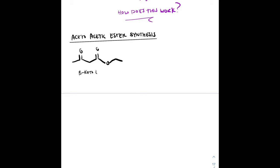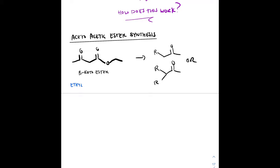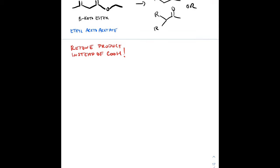The beta-keto ester is called ethyl acetoacetate — hence acetoacetic ester synthesis. Those alpha hydrogens nestled between the two carbonyls are very acidic, and we can still form two enolates, giving resonance stabilization. The final product is a ketone with R groups on the alpha position. Let's work through an example: with ethyl acetoacetate, sodium ethoxide as base, and a cyclohexylmethyl halide, we form the enolate, attack the alkyl halide, get the alpha-substituted dicarbonyl, then add H₃O⁺ and heat to decarboxylate and give the final methyl ketone product.